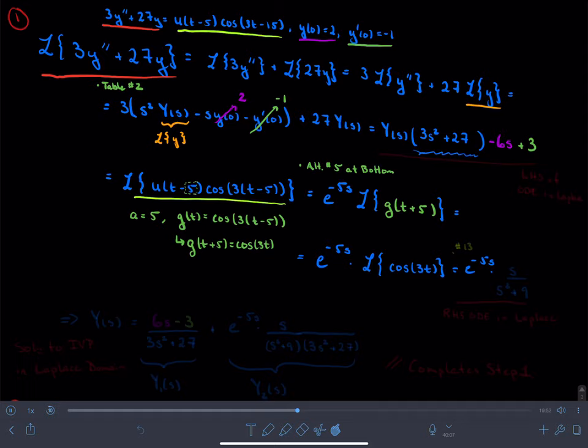This is found in table entry number 13. And so this becomes s over s squared plus 9.